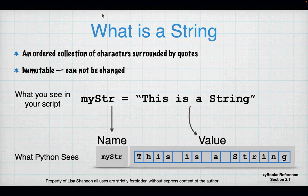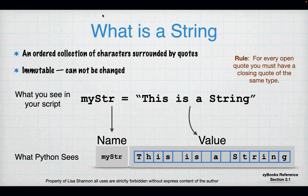I'm going to repeat myself a lot tonight. Mystr is a variable — I know it is a variable because it is on the left-hand side of a single equal sign. The value on the right-hand side is a string; I know it's a string because it is surrounded by the same kind of quotes. For every open quote you have to have a closed quote of the same type. If you open with double quotes, you must close with double quotes; if you open with single quotes, you must close with single quotes. If they are not balanced and not the same kind, you're going to get a syntax error.